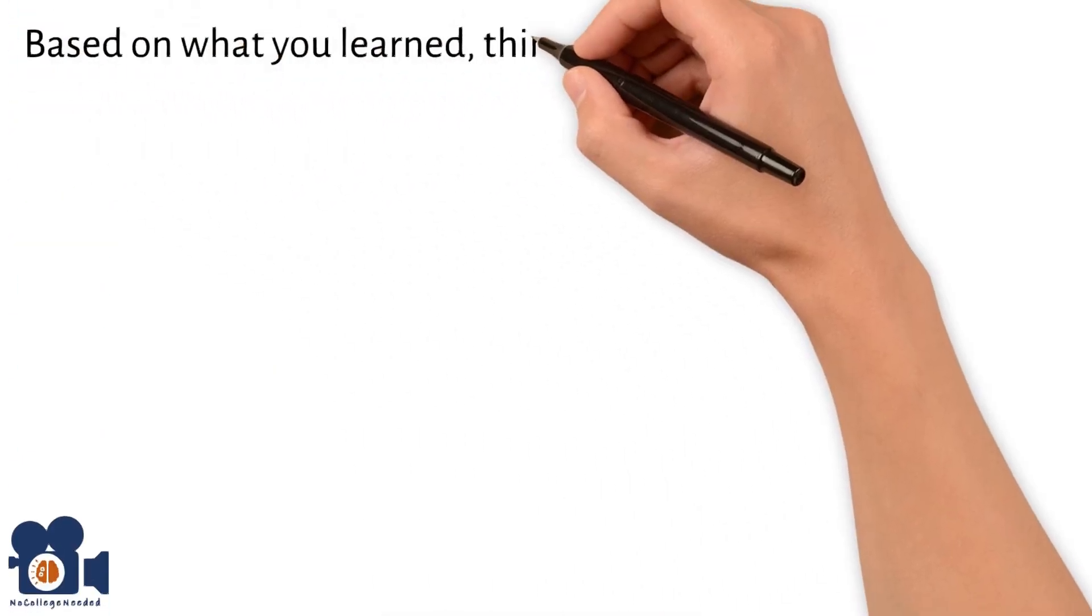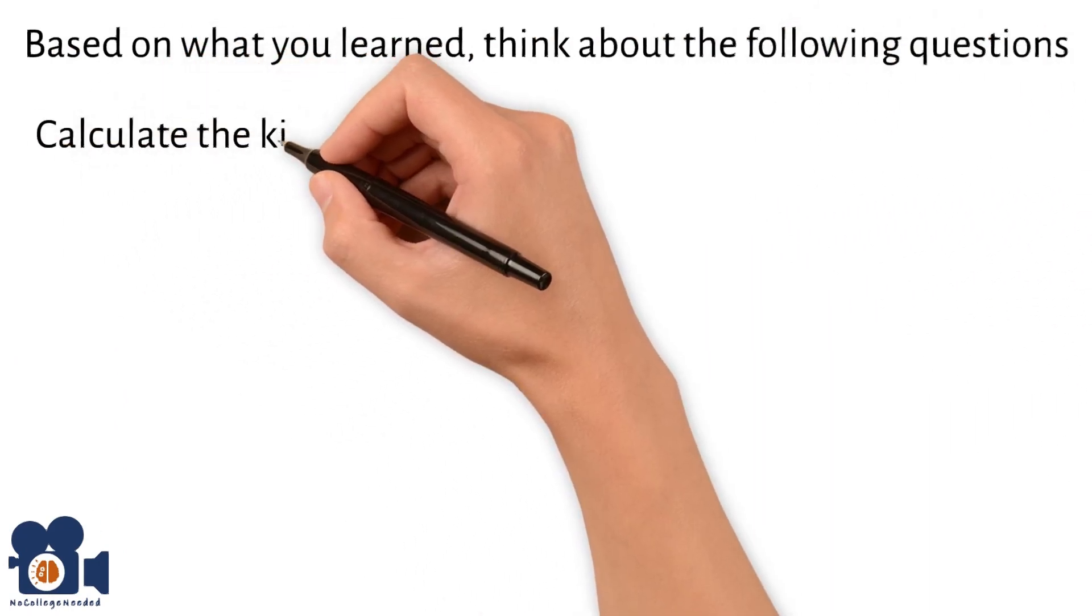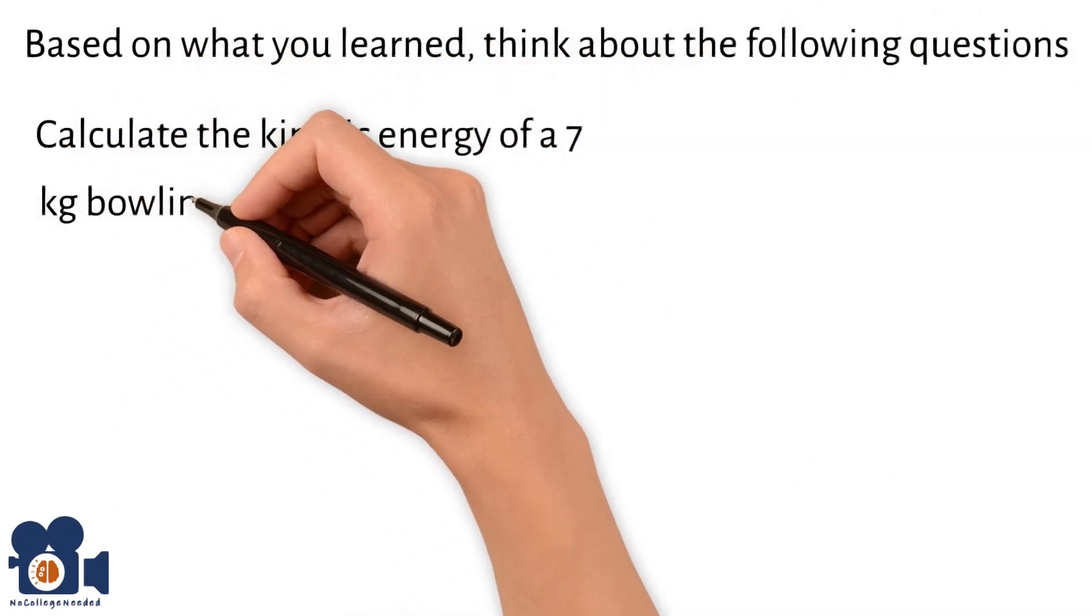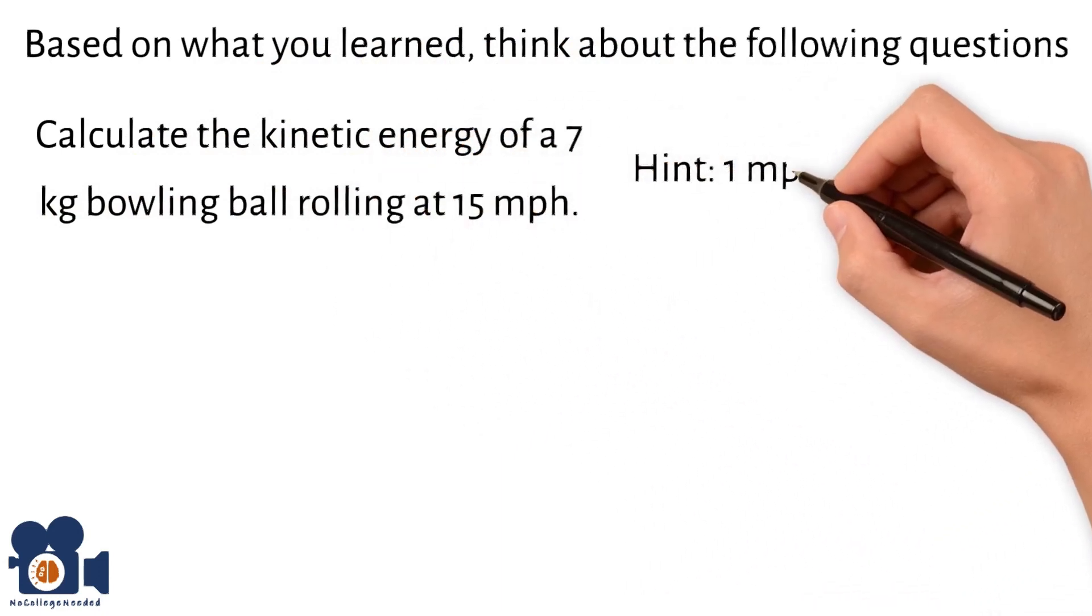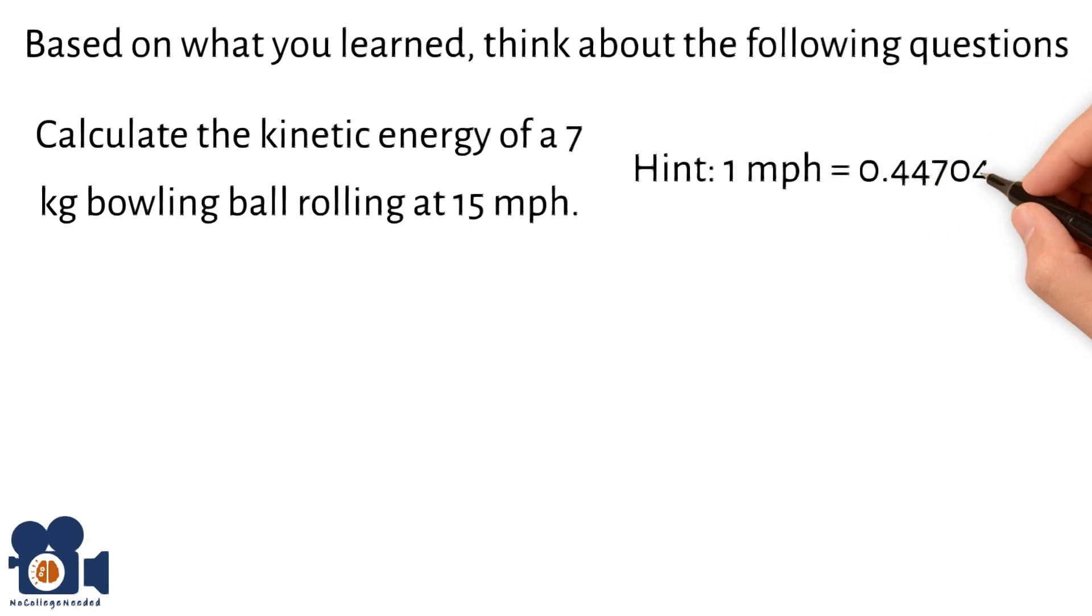Based on what you learned, think about the following questions. Calculate the kinetic energy of a 7-kilogram bowling ball rolling at 15 miles per hour. Hint, 1 mile per hour equals 0.44704 meters per second.